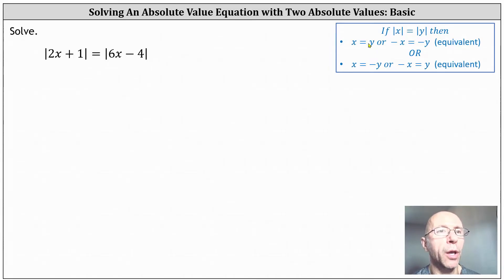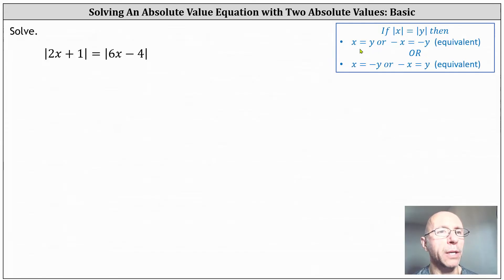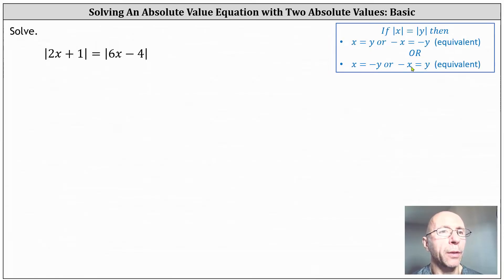The equation will be true when x equals y or negative x equals negative y, but notice these two equations are equivalent. If we multiply both sides of the first equation by negative one, we do get negative x equals negative y. The two other cases are x equals negative y or negative x equals y, but again these two equations are equivalent. If we multiply both sides of the first equation by negative one, we do get negative x equals y.